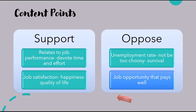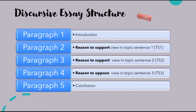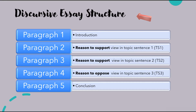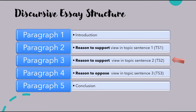Let's now look at the structure of a discursive essay. You will need to have five paragraphs. Your first paragraph would be the introduction. Paragraph 2 will be your first content point — topic sentence 1 — giving your first reason to support the view. In paragraph 3 will be the second reason to support the view — topic sentence 2. In the fourth paragraph, you will present a contrasting view and provide a reason to oppose the topic — topic sentence 3. And paragraph 5 would be your conclusion.